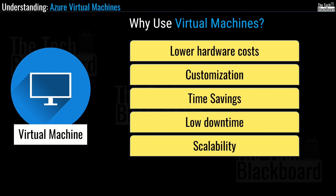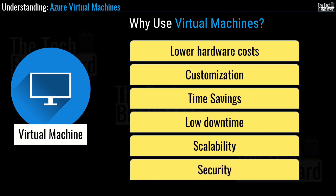Finally, let's talk about security. The ability of virtual machines to run multiple operating systems means that using a guest OS on a virtual machine allows you to run apps of questionable security and protect your host's operating system. So these are the six major factors why you should use virtual machines.